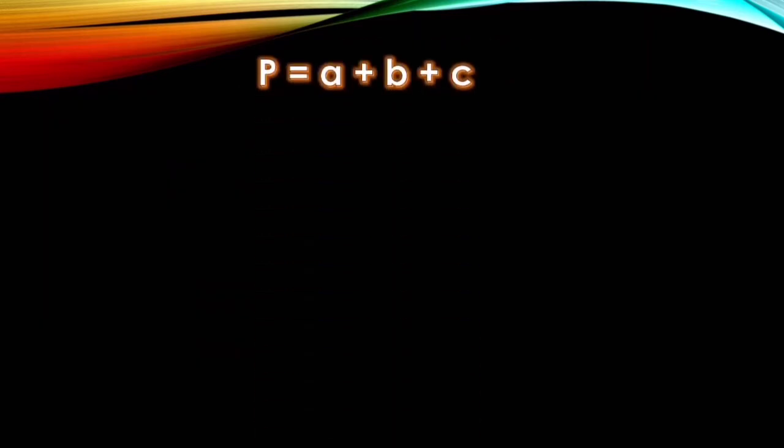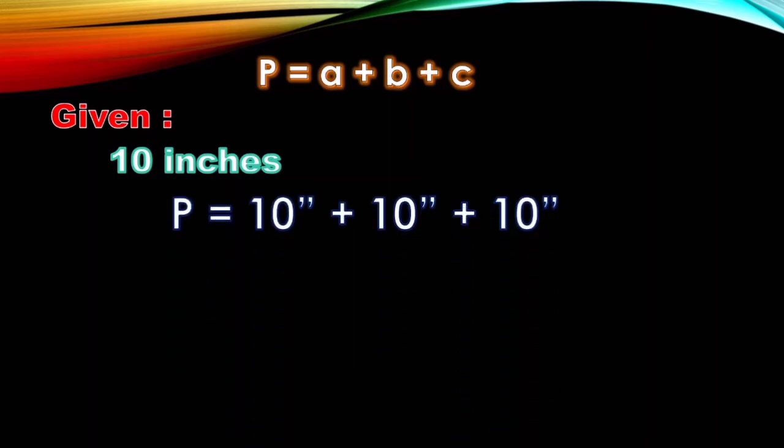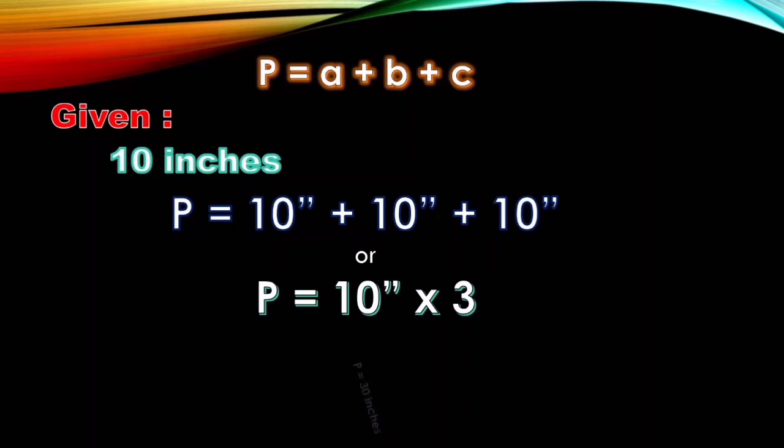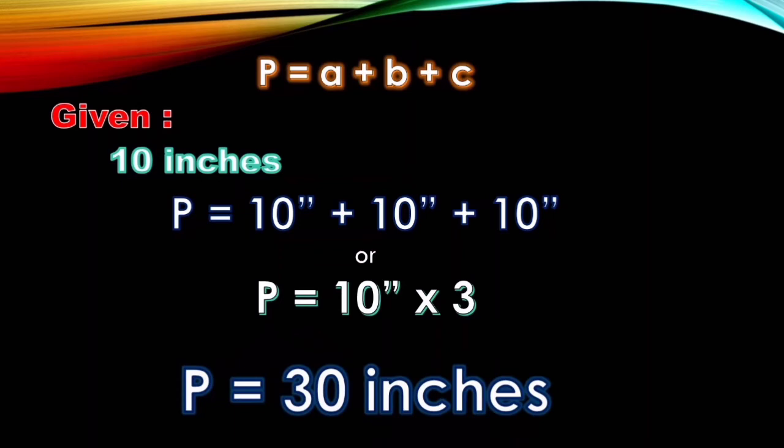This is the formula that we used and the given number is 10 inches. You know you can use the shortcut, right? So, P is equal to 10 inches plus 10 inches plus 10 inches or simply the shortcut, P is equal to 10 inches times 3. You can use it because in the problem the triangle is an equilateral triangle. Are you ready for the final answer? The answer is 30 inches. Don't forget the label inches because the measurement may be wrong if you use a different label. So, don't forget the label!